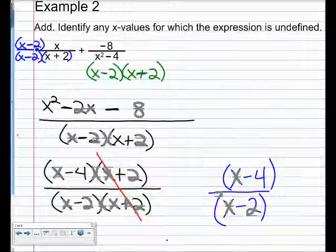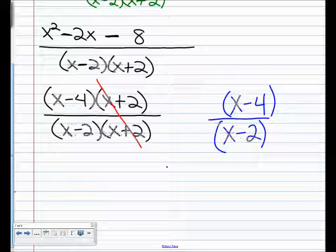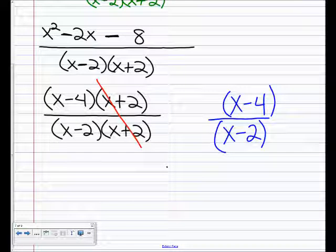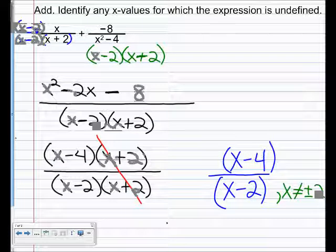It just says also to identify values that make the expression undefined. So what values can x not be equal to? Positive 2 or negative 2. So you should write x cannot be equal to plus or minus 2. So you're looking to find common denominators to add or subtract these expressions.